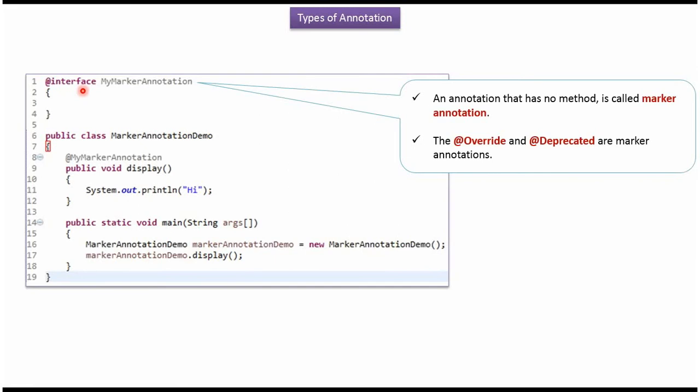Here I have defined a custom annotation called myMarker annotation. MyMarker annotation does not have any methods. If an annotation does not have any methods, then it is called a marker annotation. The @Override and @Deprecated annotations are marker annotations — these are built-in annotations.